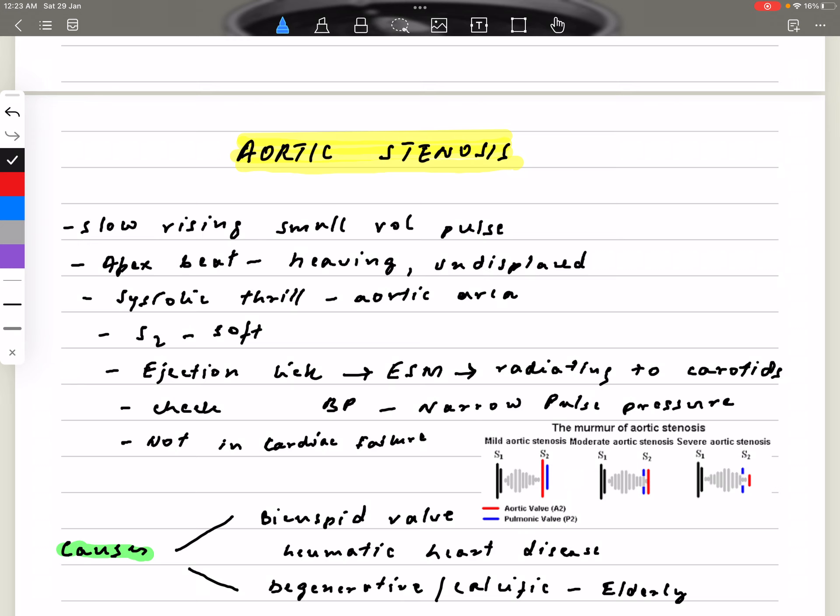So if you see this scenario, the moment you feel for the pulse you will appreciate there is a slow rising, small volume pulse, and the apex beat will be heaving but it will not be displaced most of the time. Remember that the apex beat is normally displaced if the patient has regurgitation, whether it is aortic regurgitation or mitral regurgitation.